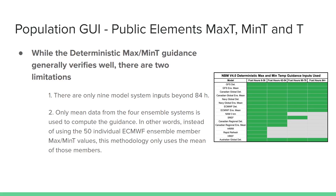While this deterministic max t, min t guidance verifies well, there are two limitations. The first is small membership — there are only nine model inputs beyond 84 hours. The second is that only the mean data from the four ensemble systems is used to compute the guidance. In other words, instead of using the 50 individual ECMWF ensemble members for max t or min t, this method only uses the mean of those members.